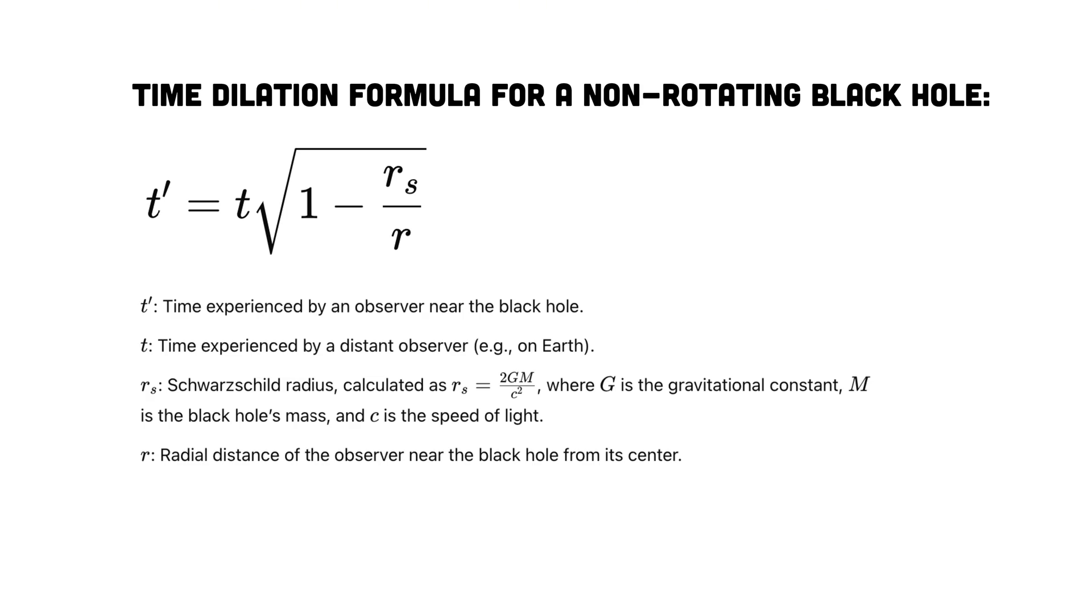Let's look at the math for a non-rotating black hole, a Schwarzschild black hole. Now, imagine Bob just outside the event horizon of a black hole, where the Schwarzschild radius is 1000 meters and his distance from the center is 1001 meters. If Bob experienced one year according to his clock, how much time would pass for Alice on Earth?